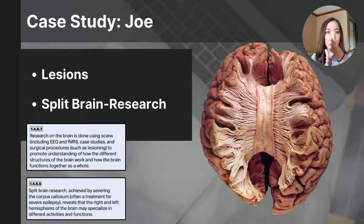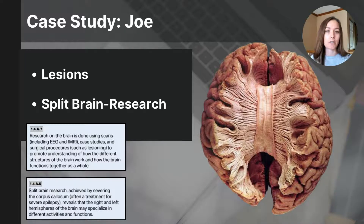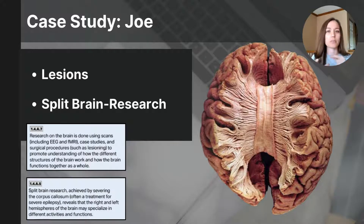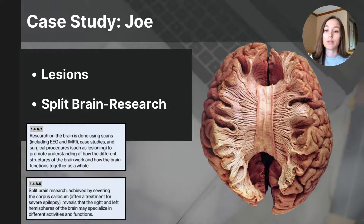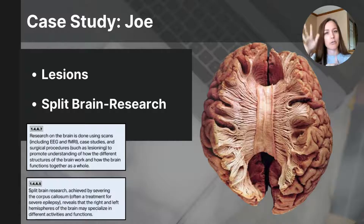Split brain surgeries involve severing the corpus callosum — that fibrous structure that connects the left and right hemispheres. By cutting the corpus callosum, the spread of epileptic seizures from one hemisphere to the other is prevented, reducing the frequency and severity of seizures. As you learned in video part 5, the corpus callosum is responsible for allowing communication to go back and forth between the left and right hemispheres. So in split brain patients, the two hemispheres are not communicating directly because the corpus callosum has been severed, and this leads to fascinating insights about how each side of the brain processes information independently.